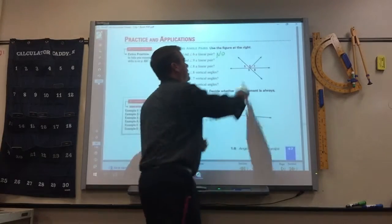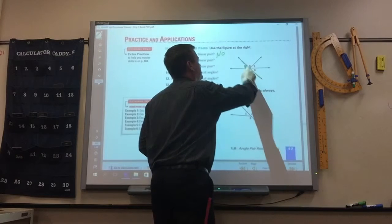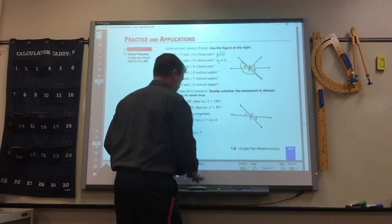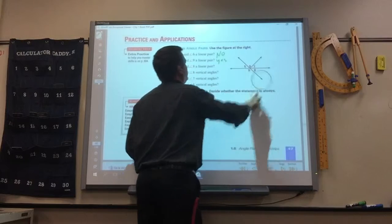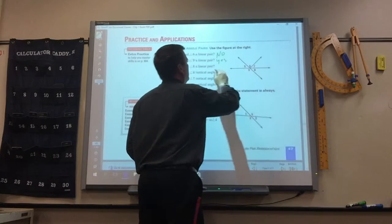Are 5 and 9 a linear pair? Yes. Are 5 and 8 a linear pair? No.